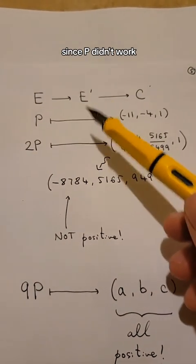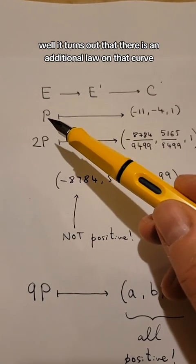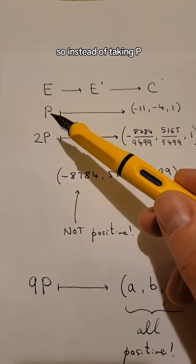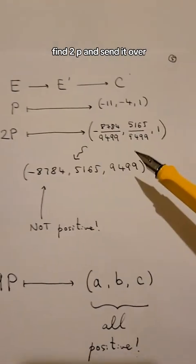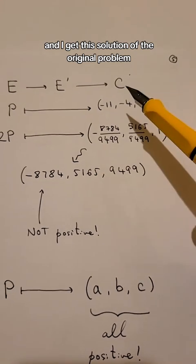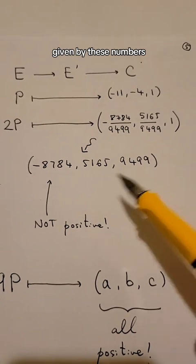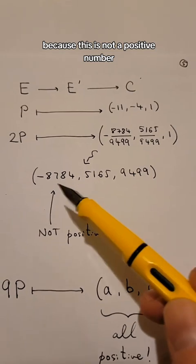Since P didn't work, I can go back to that curve and find other points. How? Well, it turns out that there is an addition law on that curve. So instead of taking P, I can add P to itself, find 2P and send it over. And I get this solution of the original problem, which corresponds to a, b, and c given by these numbers. But this is also not a solution because this is not a positive number.